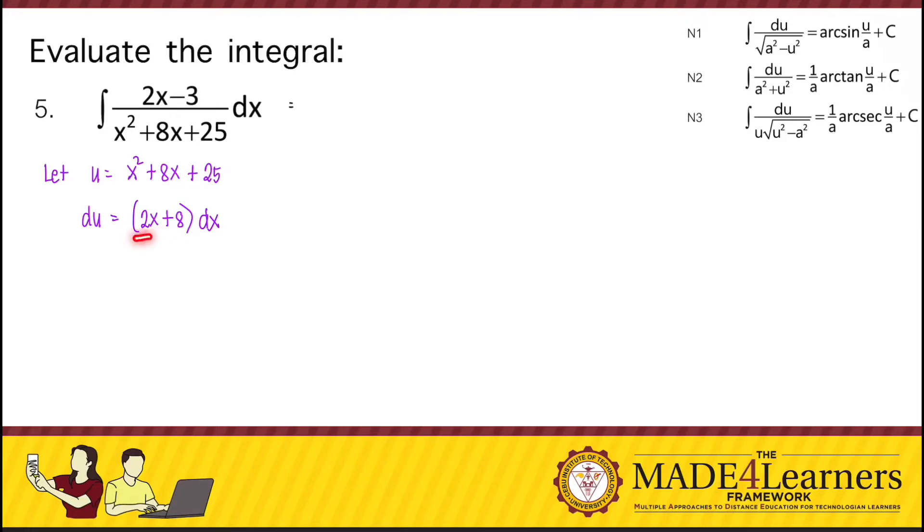In the numerator, if we have 2x plus 8, then we can just integrate the given by substitution. Yes, we have 2x in the numerator, but it's minus 3 and not plus 8.